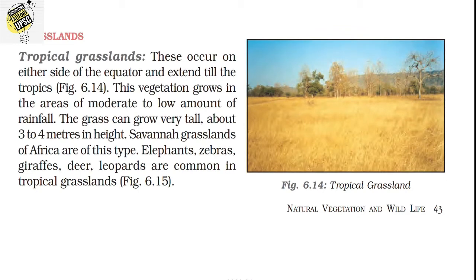Tropical grasslands occur on either side of the equator and extend till the tropics. They grow in areas of moderate to low rainfall. The grass can grow very tall — about three to four meters in height. The savannah grasslands of Africa are a classic example. Common animals found in tropical grasslands include elephants, zebras, giraffes, deer, and leopards.